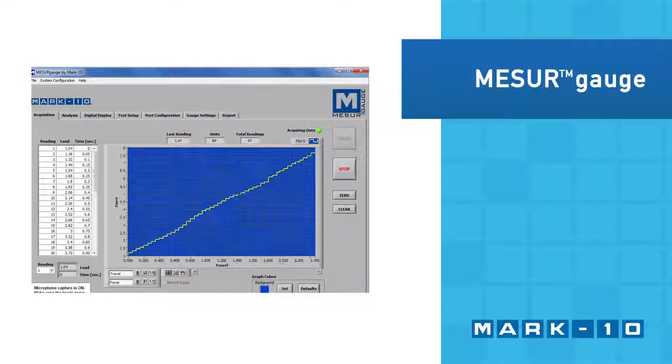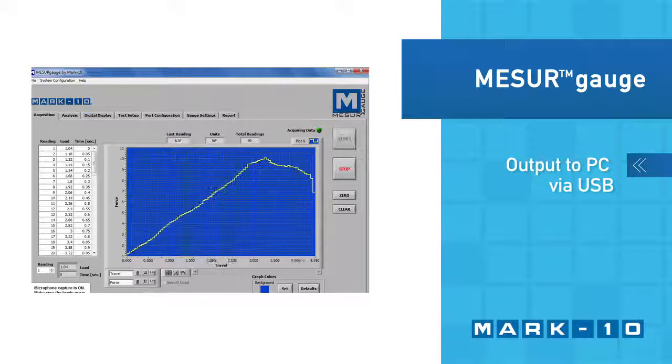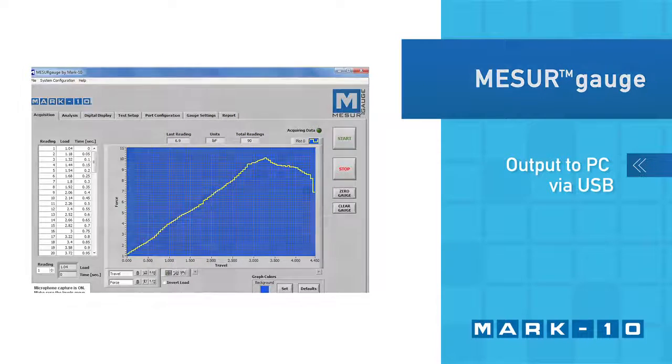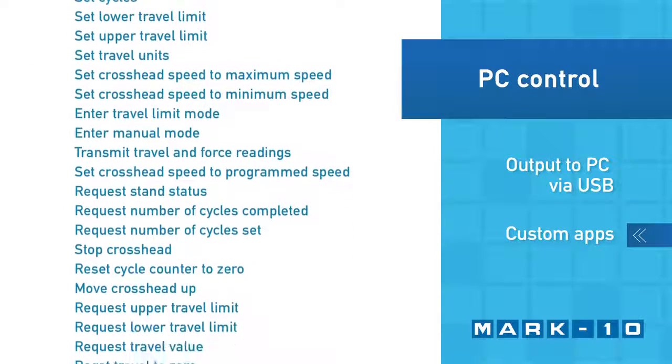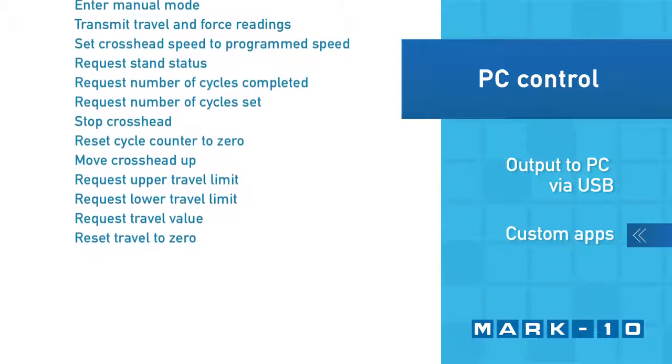Force and distance data can be output to a PC via USB for graphing and reporting. Custom applications can also be developed utilizing the ESM-303's ASCII command set.